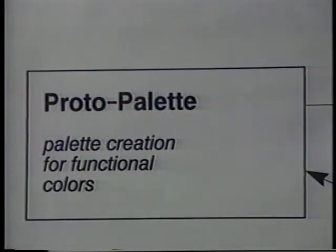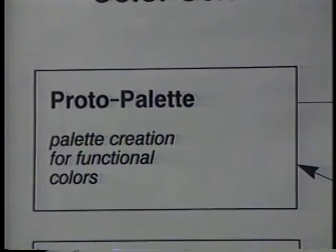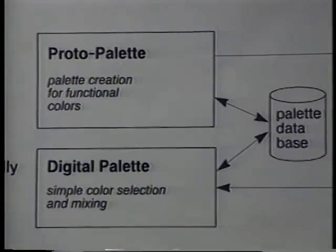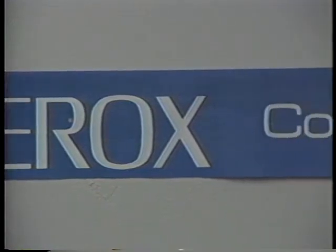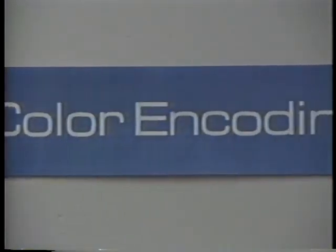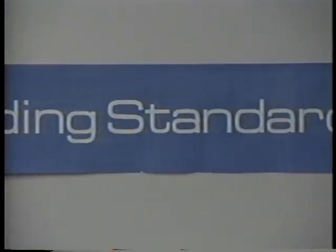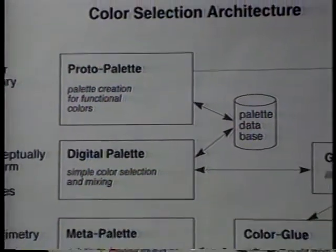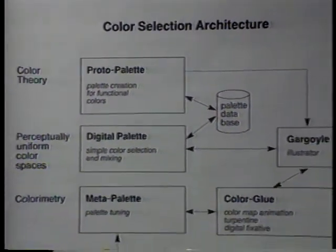In summary, we have one tool for automatically generating and selecting harmonious functional colors, the protopalette, and one tool, the digital palette, that adds reference colors and offers the ability to blend colors. To avoid device dependencies, the tools are based on the Xerox color encoding standard. We perform all computations on color in a perceptually uniform color space to make the user interface as smooth as possible. We did all of this before invoking the illustrator because we want to work first on the colors and then on the shapes.